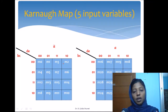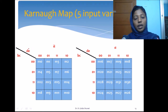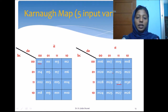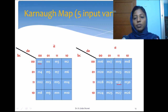This is a 5-variable Karnaugh map formed from two 4-variable Karnaugh maps. Because the number of inputs is 5, the possible combinations are 2 to the power 5, which equals 32. We have 16 cells in this block representing A-bar and 16 cells in this block representing A, with BC along the rows and DE along the columns for both maps.